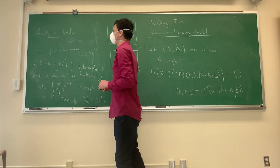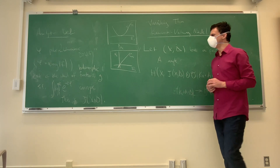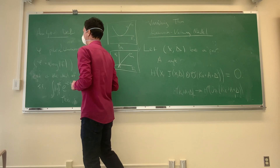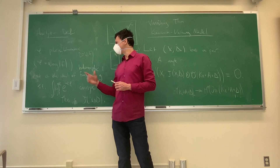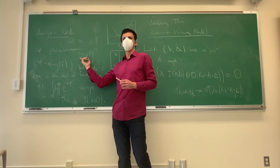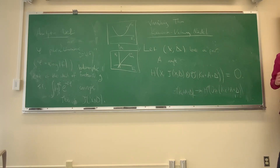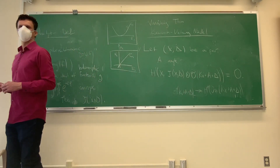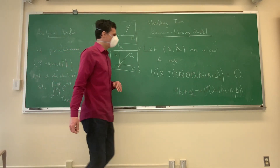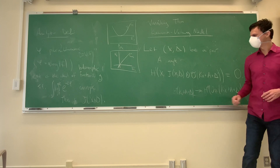Next time I want to cover a theorem in Lazarsfeld giving a nice combinatorial description of multiplier ideals in the monomial case — where instead of D you use an ideal, and D is like the generic member of the ideal. I also want to give an example where this kind of argument proves a nice theorem. That'll be for Monday.